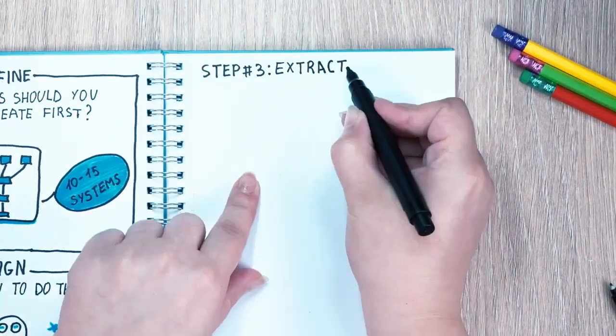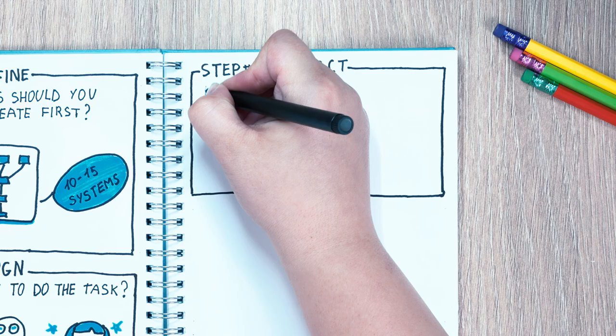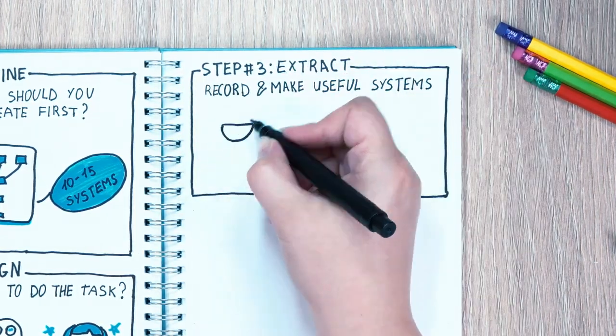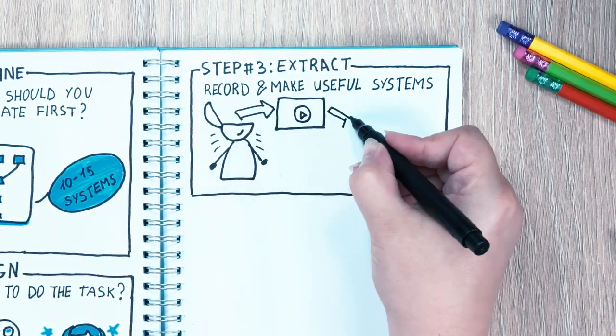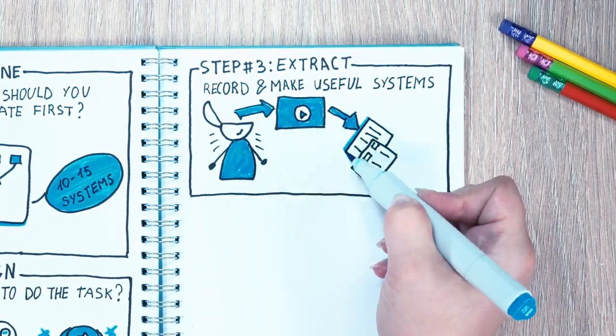Step number three is extract, and it's where you record team members completing the tasks, with the help of a systems champion who takes those recordings and turns them into usable, shareable documents for the whole team to reference.